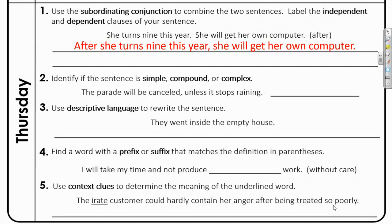Now you can see the two clauses of our sentence. The first clause is 'after she turns nine this year.' Can that by itself be a complete sentence? No, because we don't know what will happen with just that clause. So put a little arch — since it cannot stand alone, this is your dependent clause. The second clause is 'she will get her own computer,' which by itself could be a complete sentence, so it is the independent clause.